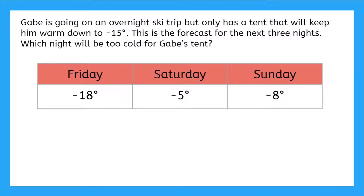Gabe is going on an overnight ski trip, but only has a tent that will keep him warm down to negative 15 degrees. This is the forecast for the next three nights. Which night will be too cold for Gabe's tent?